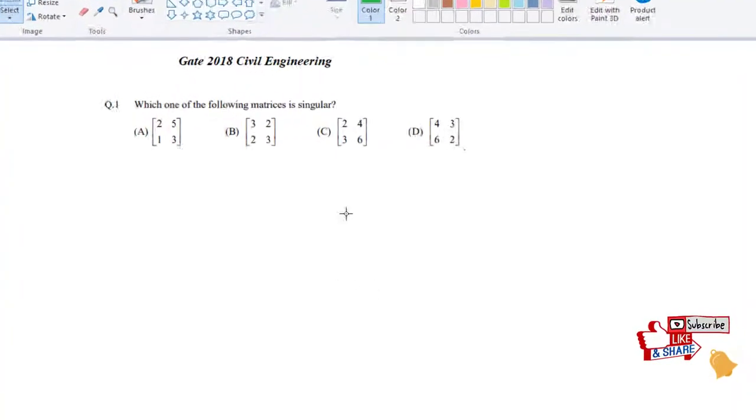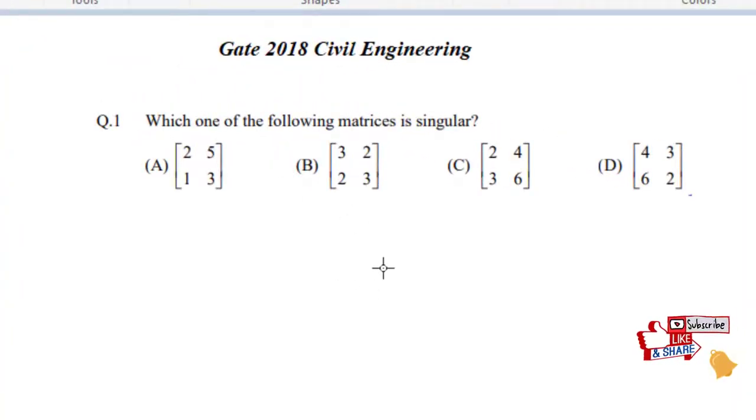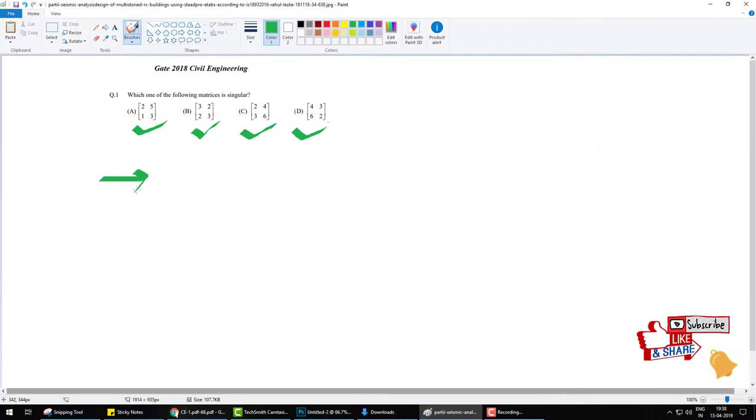Hello everyone, in 2018 GATE Civil Engineering, this question asks: which one of the following matrices is singular? We have four options A, B, C, and D. The first condition for a singular matrix is the matrix must be square, and all four of these matrices are already square matrices. The second condition is the determinant of the matrix is zero.